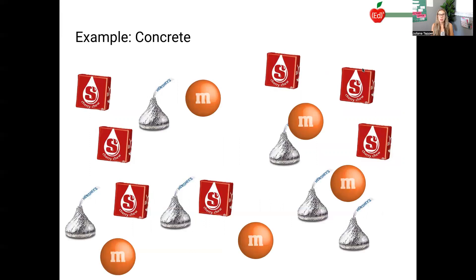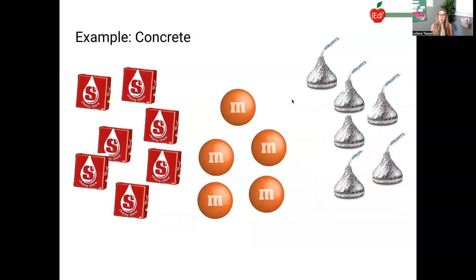So maybe our manipulatives for this are Starbursts, M&Ms and Hershey Kisses. And so one student would take a bunch of these things and put it on a plate just in a random order. And then the next student's job would be to take them and regroup them. So to put all the Starbursts together, all the like things together, all the Starbursts together, all the M&Ms together, all the Hershey Kisses together, and then to tell their partner what they have.